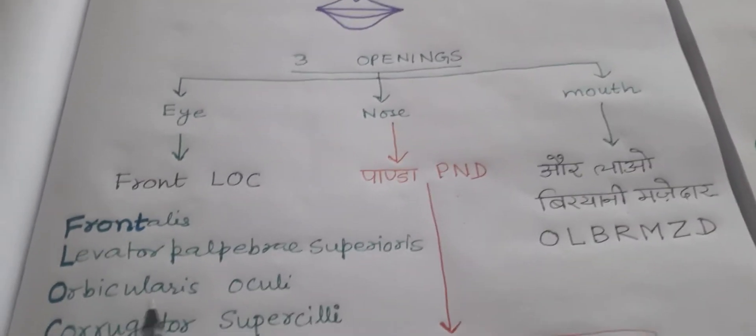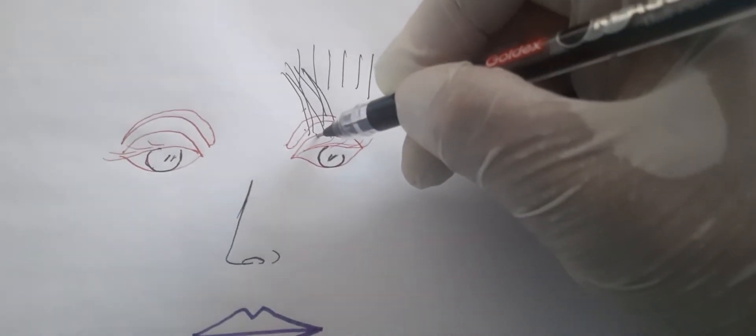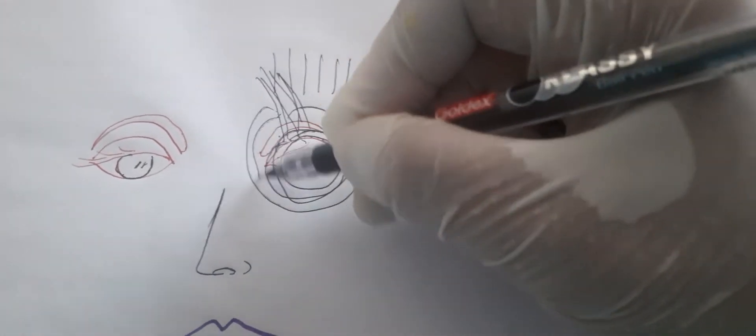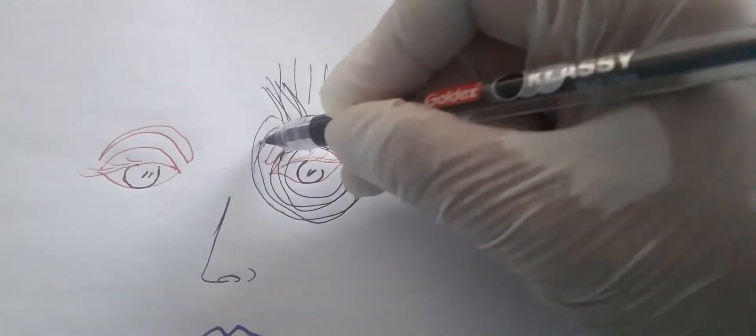On the inner aspect, levator palpebrae superioris. Orbicularis oculi around the eye - this is the palpebral part and just external to that is the orbital part.